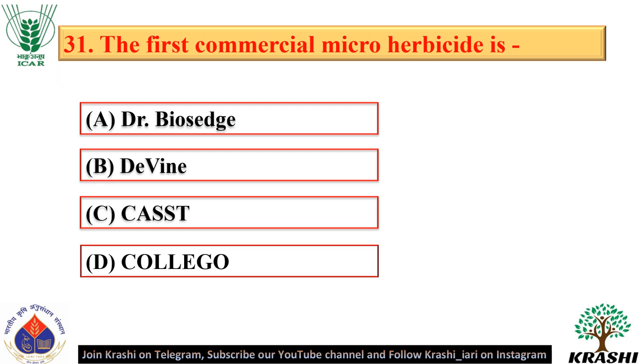Question number 31. The first commercial mycoherbicide is Collego — option D.